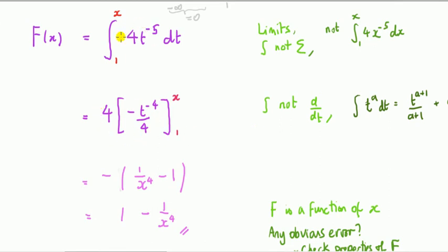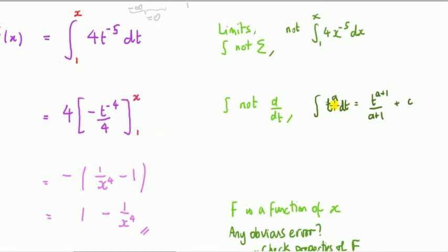Now computing the integral — a common mistake here is to differentiate instead of integrate. People take the power down, getting minus five, which is differentiating. We want to integrate. The rule is: t to the a integrated gives t to the a plus one, divided by a plus one. To check you've got the rule right, differentiate the result and you should get back to t to the a.